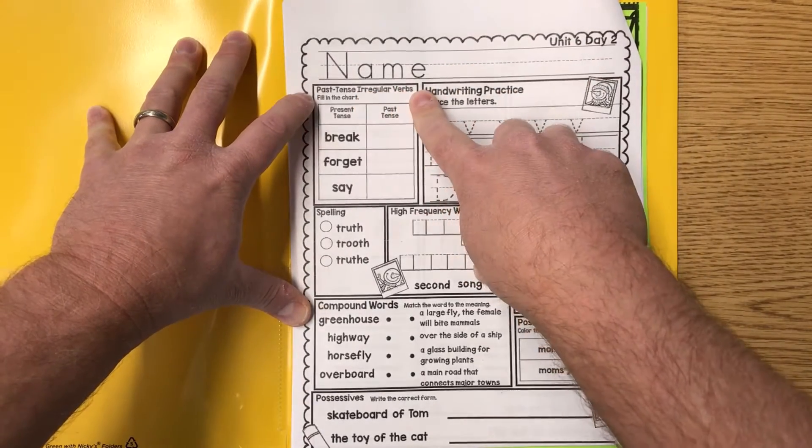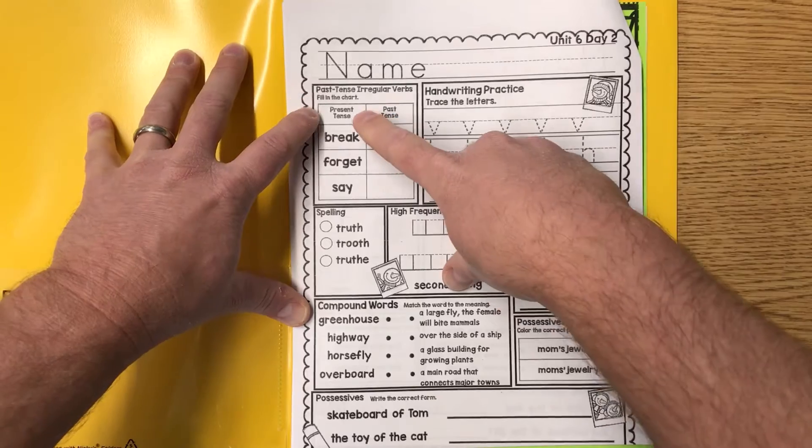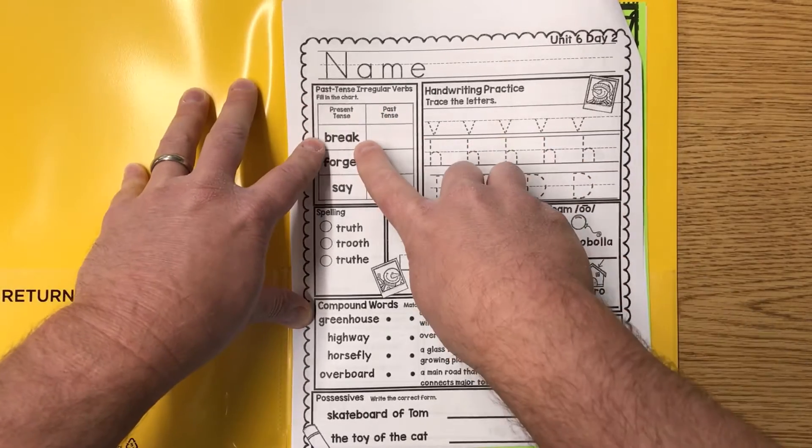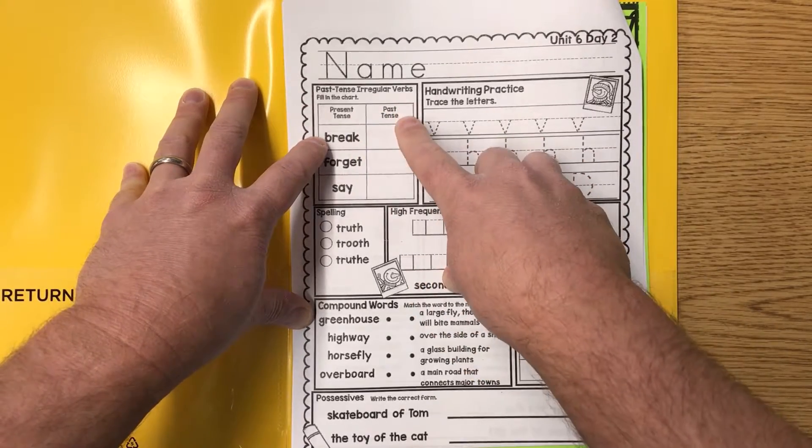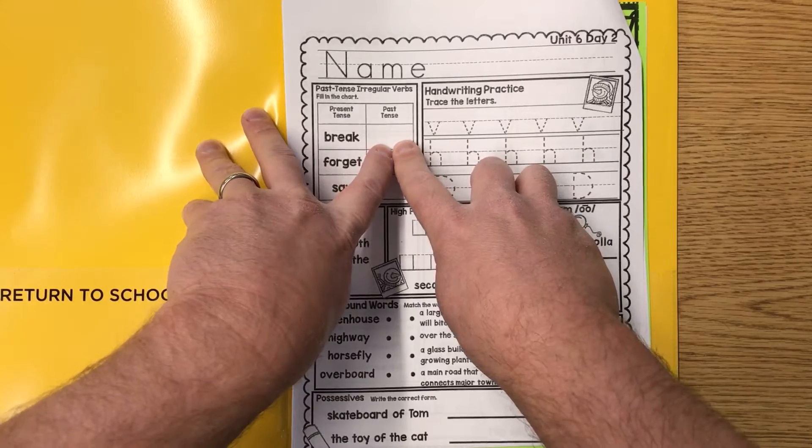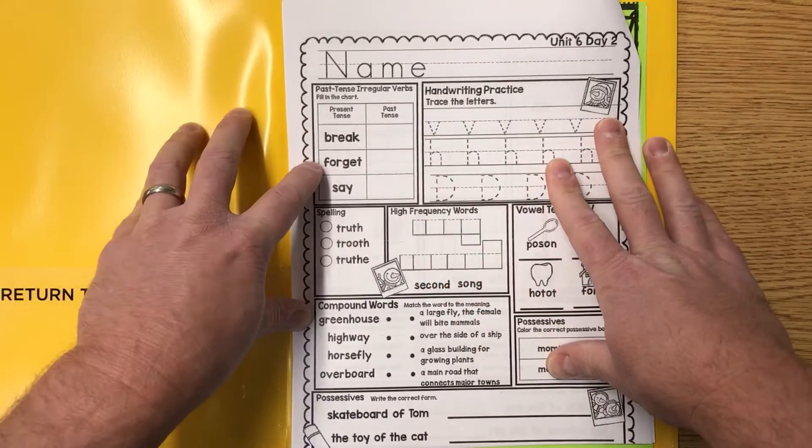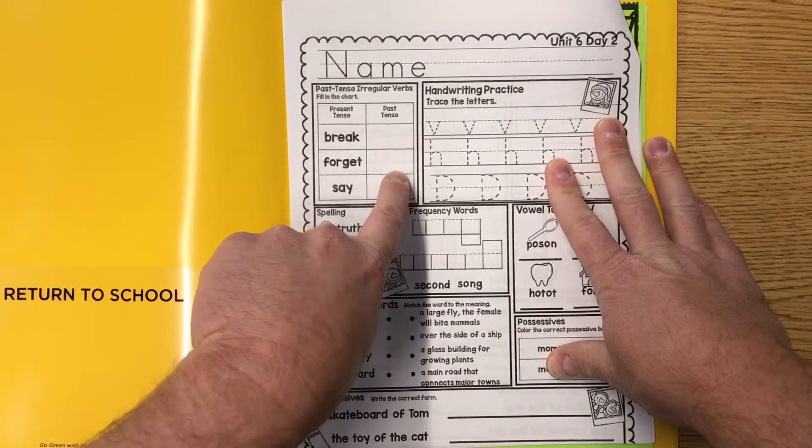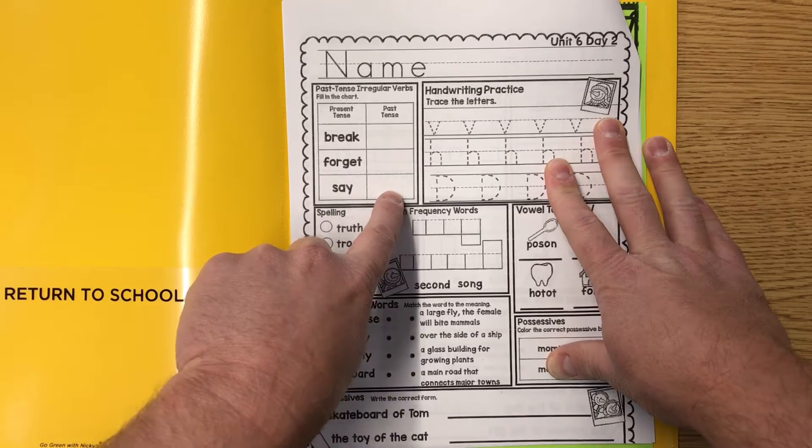Past tense irregular verbs. Fill in the chart. The present tense for break, the past tense would be broken. So we also have forget, fill what you think, and say, fill what you think.